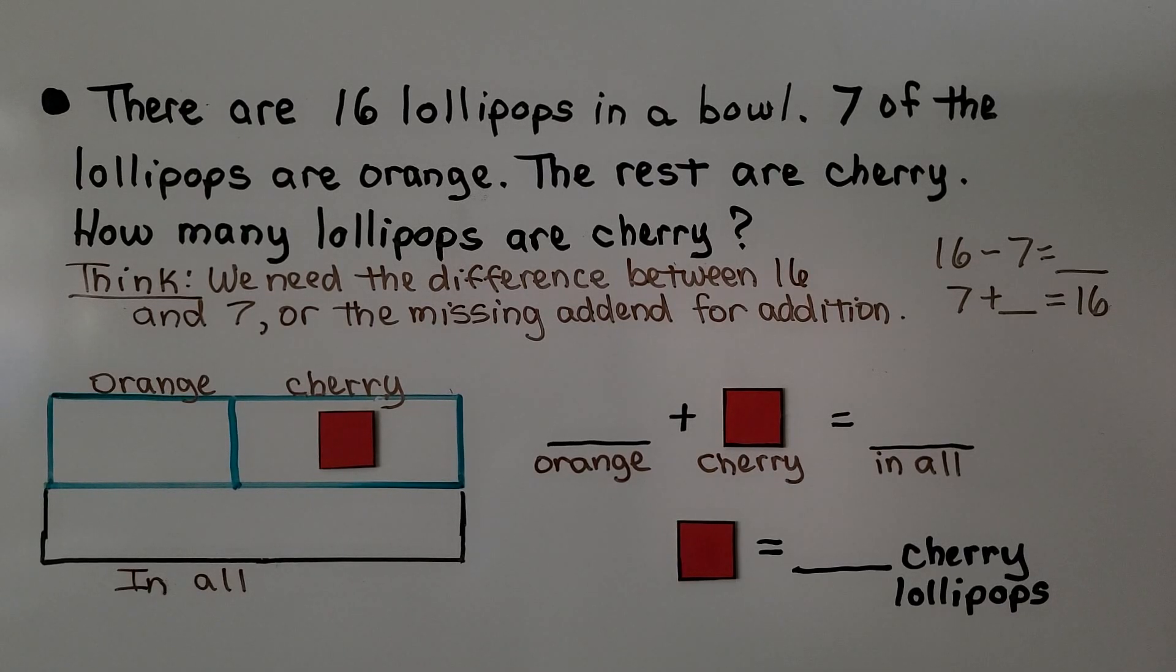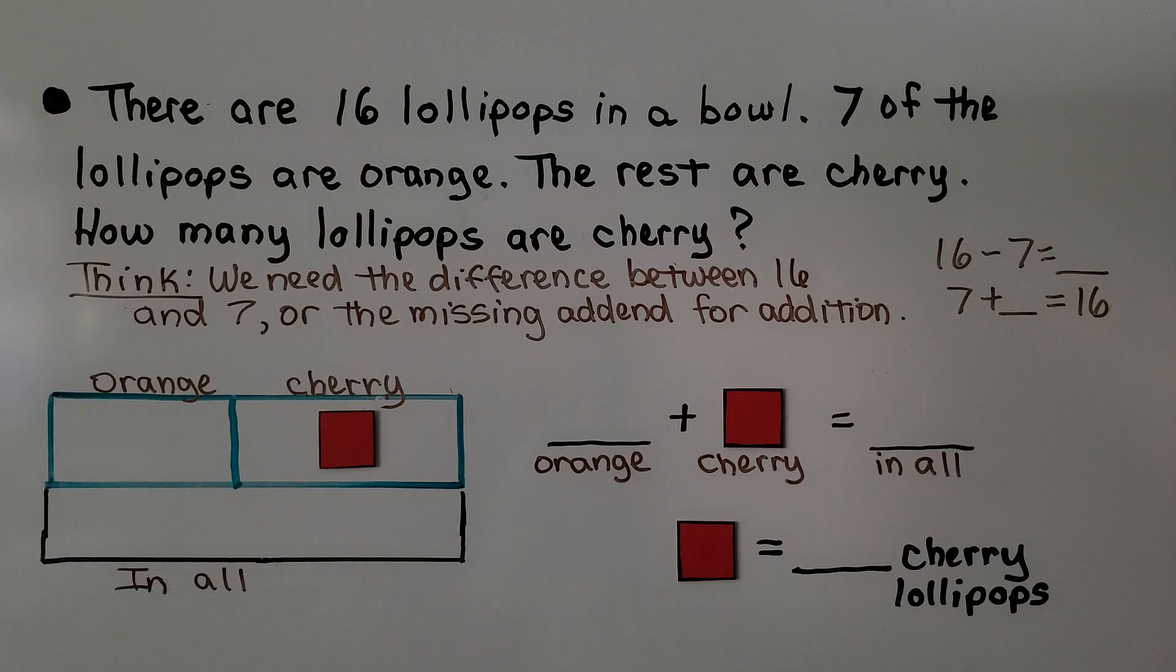There are 16 lollipops in a bowl. Seven of the lollipops are orange and the rest are cherry. How many lollipops are cherry? We think we need to find the difference between 16 and 7. There's 16 in all. Seven of them are orange. The difference would be the cherry.